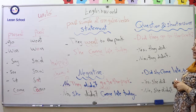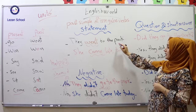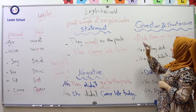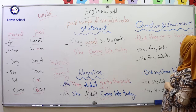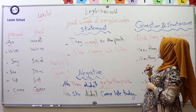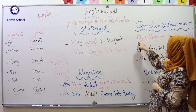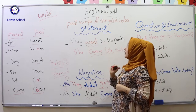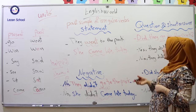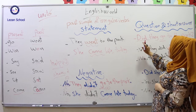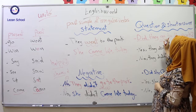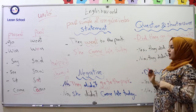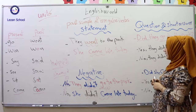Now let's go to the question and short answer. Because the sentence 'They went to the park' is in past tense, we write 'did' from the beginning. When 'did' is used, the past verb must change to its present form — we cannot write 'went,' we write 'go.' So the question is: 'Did they go to the park?' The short answers are: 'Yes, they did' and 'No, they didn't.'